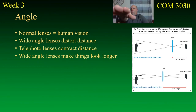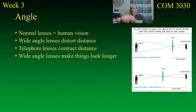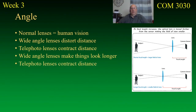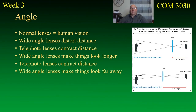Wide angle lenses also make things look longer. This is a wide angle lens — look how long my arm looks; it looks like it's 20 feet long. If this were a telephoto lens it might look more compressed, and of course if it's a normal lens it would look more normal. Telephoto lenses contract distance.